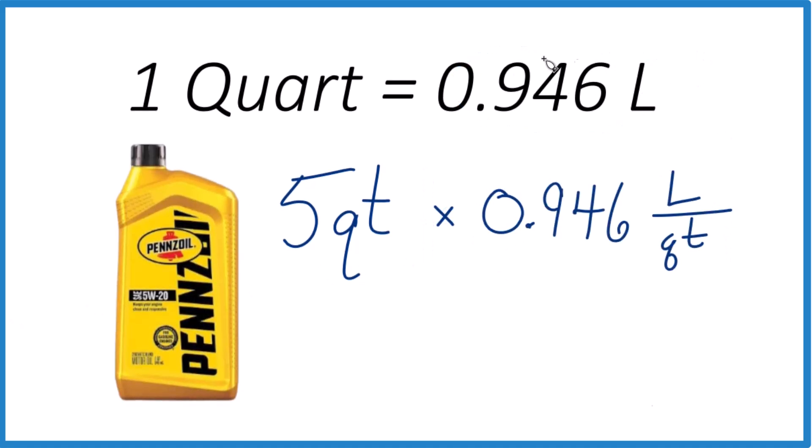And remember, that's 0.946 liters in one quart, liters per quart. So we do the multiplication, five times 0.946. Quarts on the top and the bottom, you get liters. That's what we're looking for.